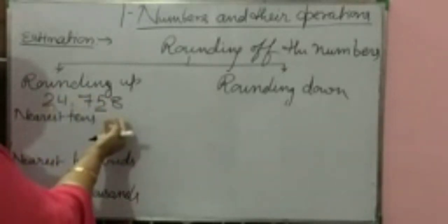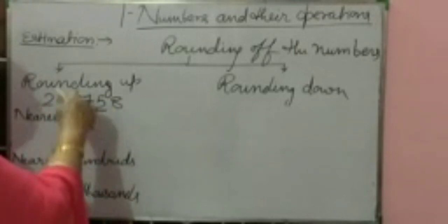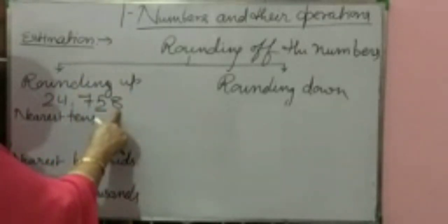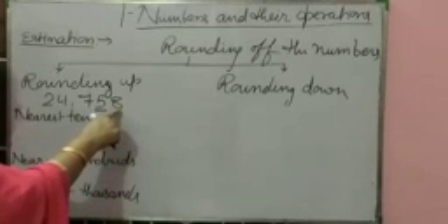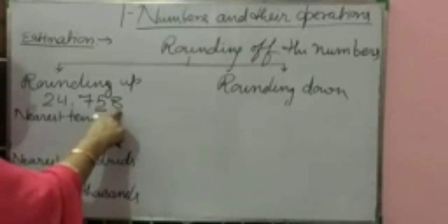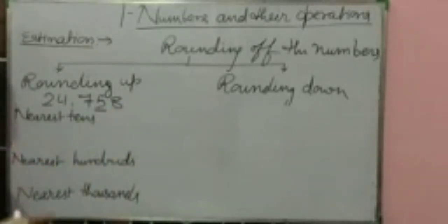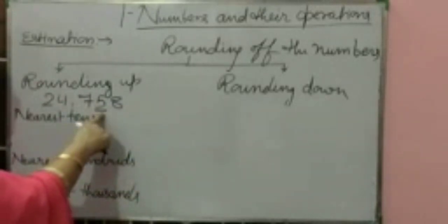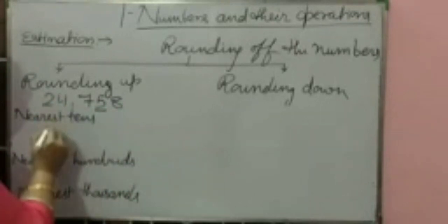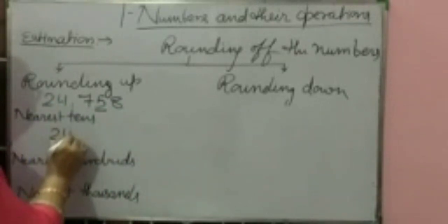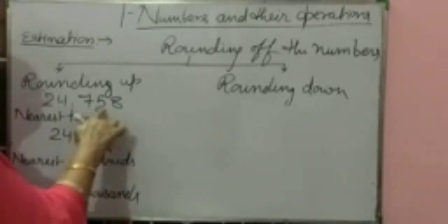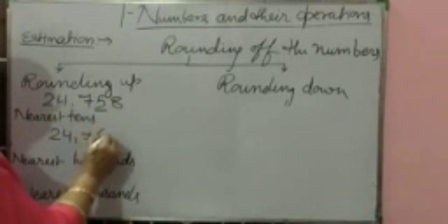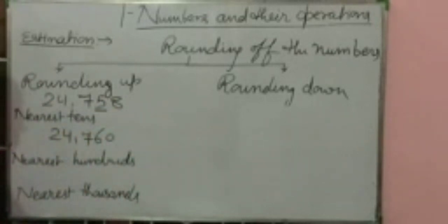Just after 5, means to the right side of 5, which digit is there? It is 8. This digit is 5 or greater than 5 — it is 8. So here, the tens digit gets plus 1. The rest remain the same. So 24,758 becomes 24,760. Plus 1. Do you all understand?